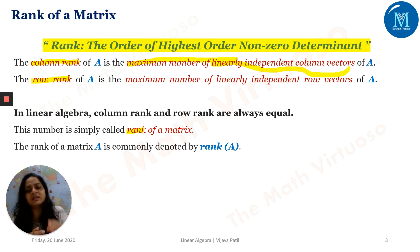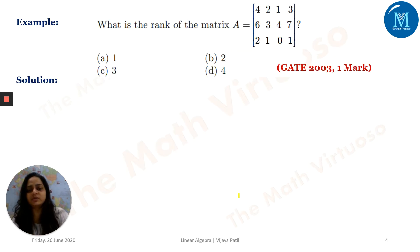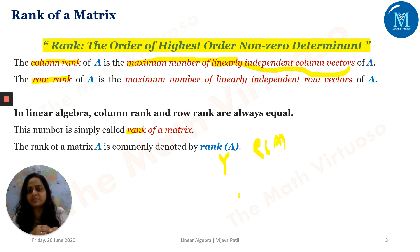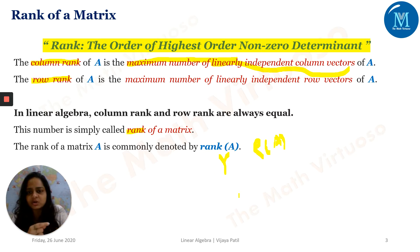The rank of a matrix A is commonly denoted as rank(A), or sometimes as ρ(A), or as a small r. So remember: rank is the order of highest order non-zero determinant.